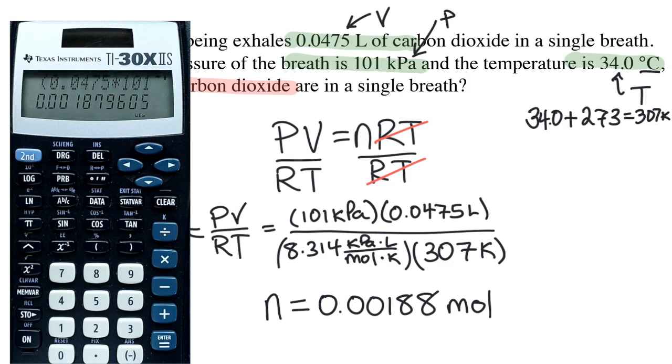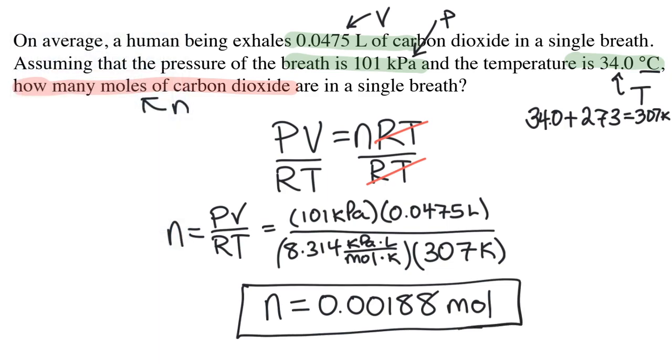I'm going to round my answer to three significant digits because each of the given variables has three significant digits. So the answer is 0.00188 moles, and the unit is mole because mole is the unit for the amount.